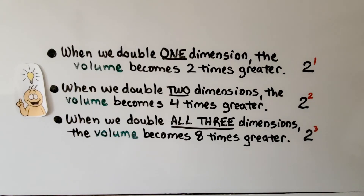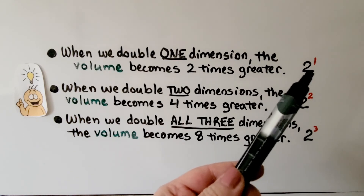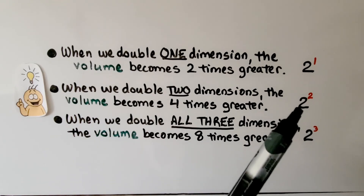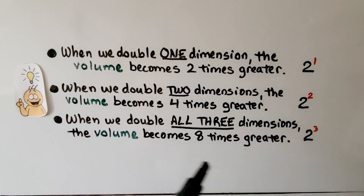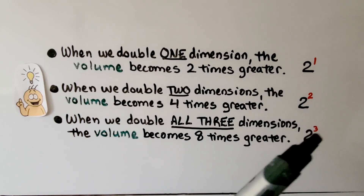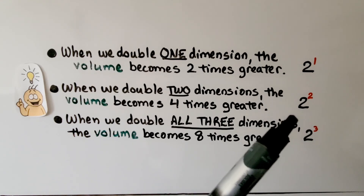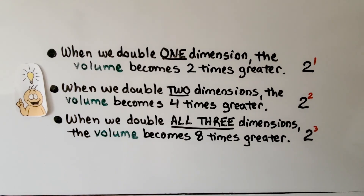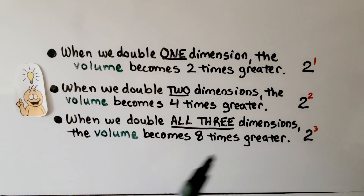When we double one dimension, the volume becomes 2 times greater — 2 to the first power. When we double two dimensions, the volume becomes 4 times greater — 2 to the second power. When we double all three dimensions, the volume becomes 8 times greater — 2 to the third power. 2 to the first power is 2; 2 to the second power is 2 times 2, that's 4; and 2 to the third power is 2 times 2 times 2, that's 8. Since we're dealing with 3-dimensional figures, there is no 2 to the fourth power — there's no fourth dimension in the figures we're dealing with.